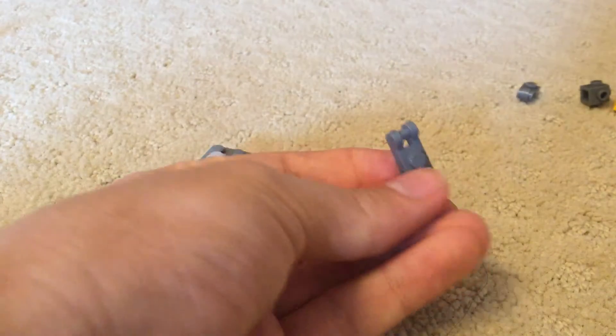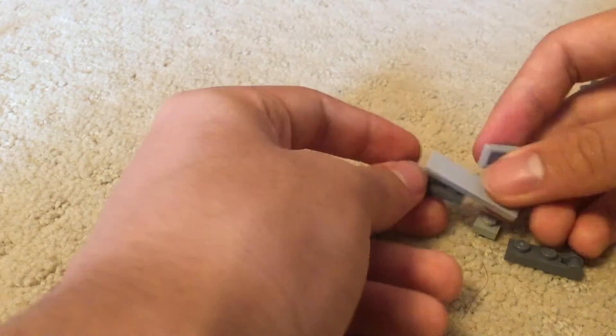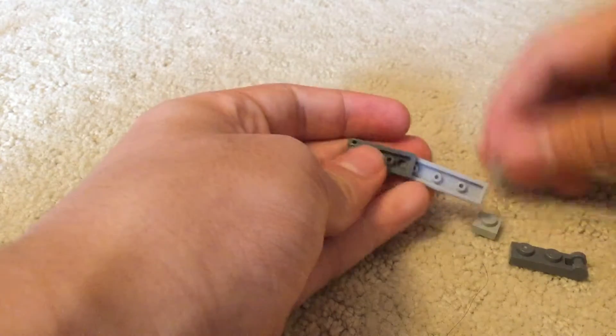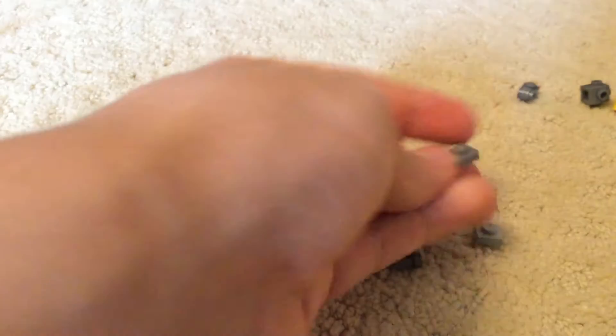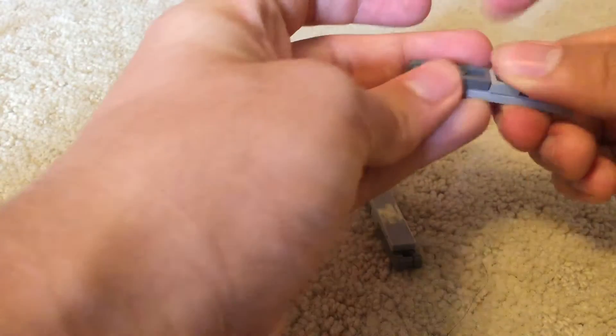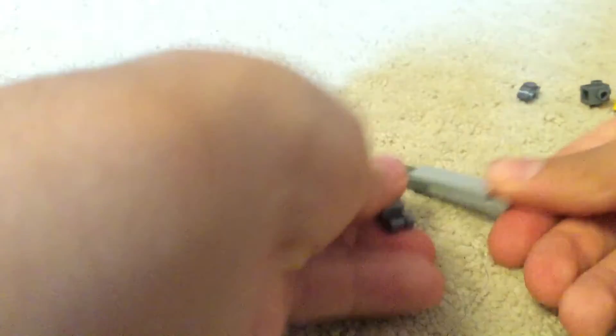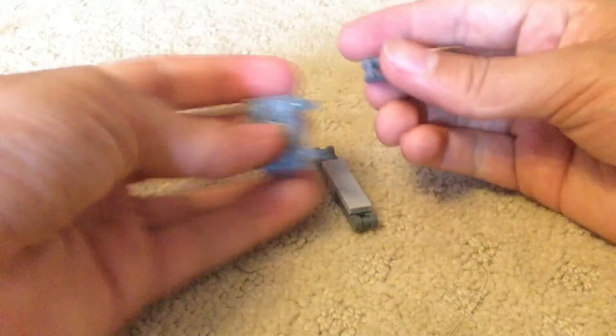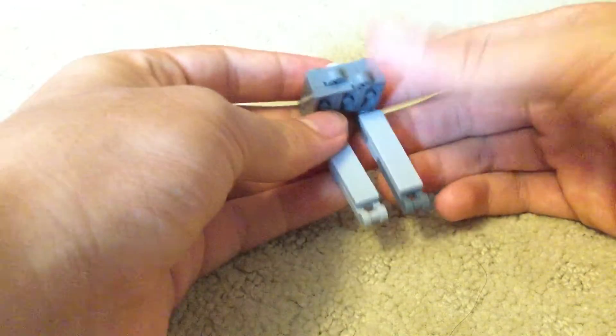Now for the legs, what you want to do is take two of these and then two 1x1s right here and then your things right here. Place a 1x1 here and then one right here. Do this again on the other side for the other leg. Then a 1x1 square stud and then another 1x2 clip thing. These are our legs, we can go ahead and attach them.